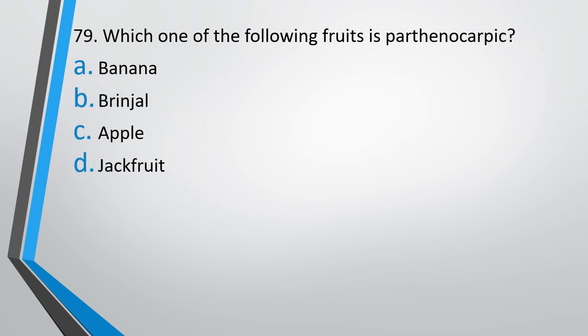Question number 79. Which one of the following fruits is parthenocarpic? Option A: Banana. Option B: Brinjal. Option C: Apple. Option D: Jackfruit. The correct answer is Option A — Banana is an example of a parthenocarpic fruit.